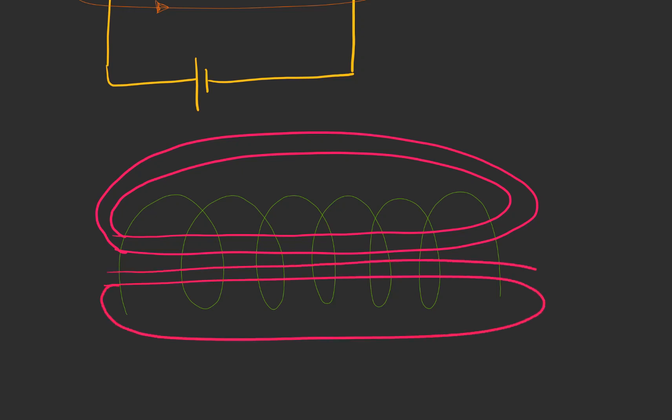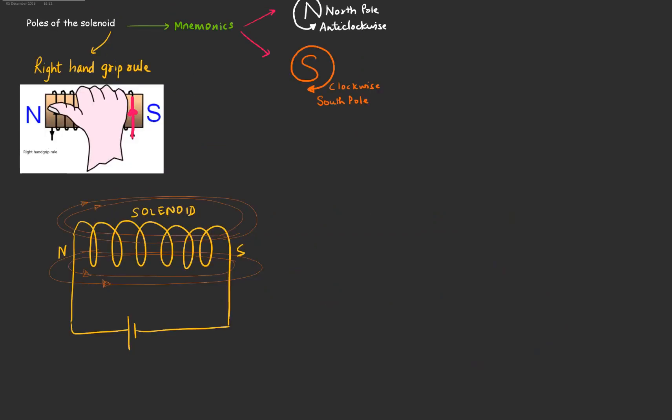The field lines inside the solenoid are parallel to each other and the magnetic field inside is also uniform. Outside the solenoid, the magnetic field lines behave the way they would around a bar magnet — they turn and go from north to south. Also, if you increase the current then the strength of the field increases, and if you increase the number of turns on the coil then the strength of the field also increases.